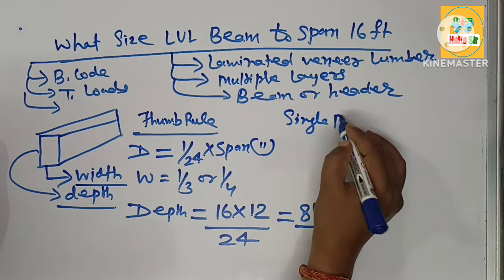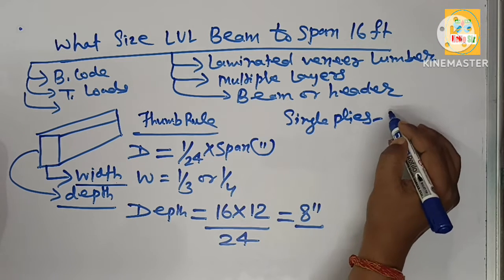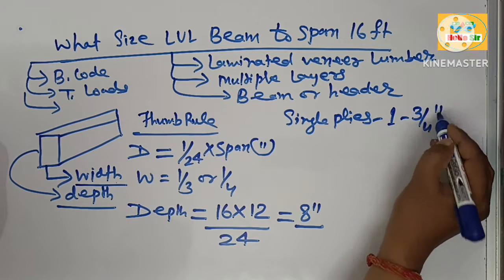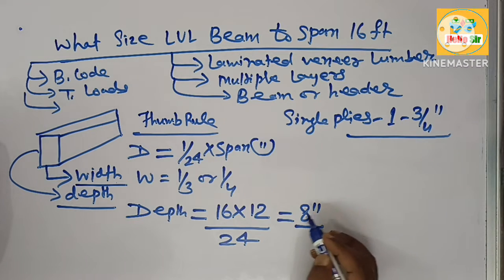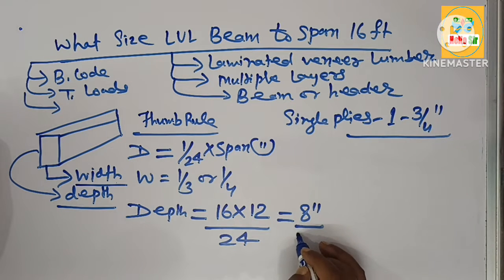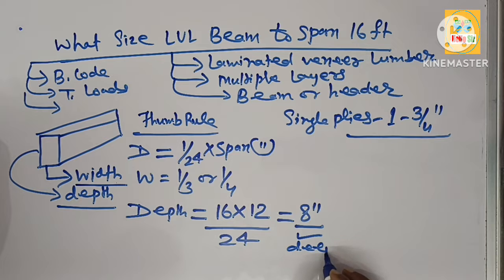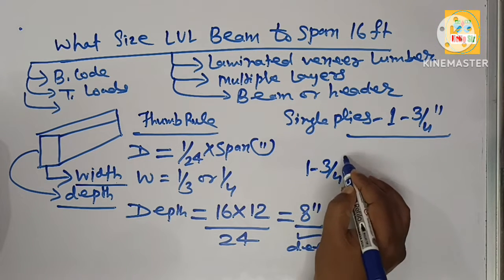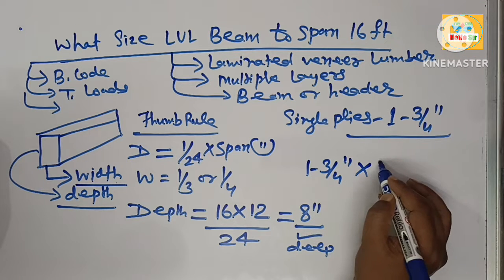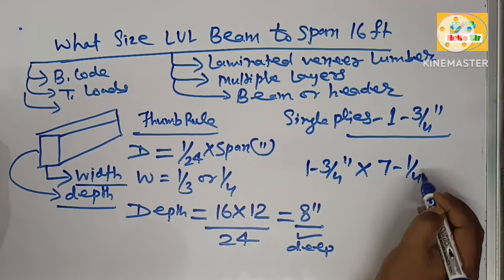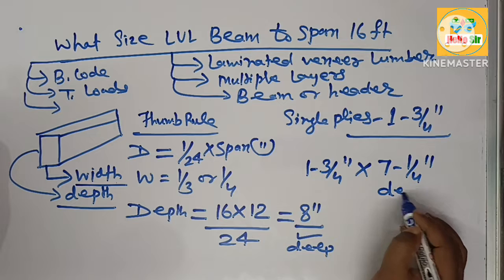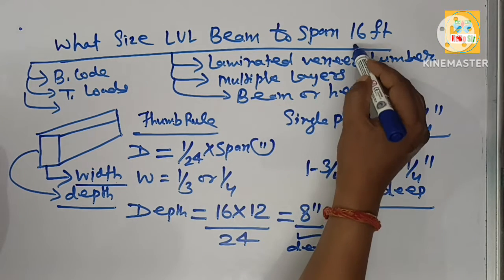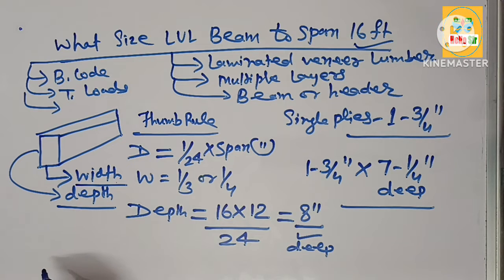And the width of single ply beam is about 1 3/4 inches. This is width and this is depth. You need a single ply 1 3/4 inches width and 7 1/4 inches deep LVL beam required to span 16 feet length.